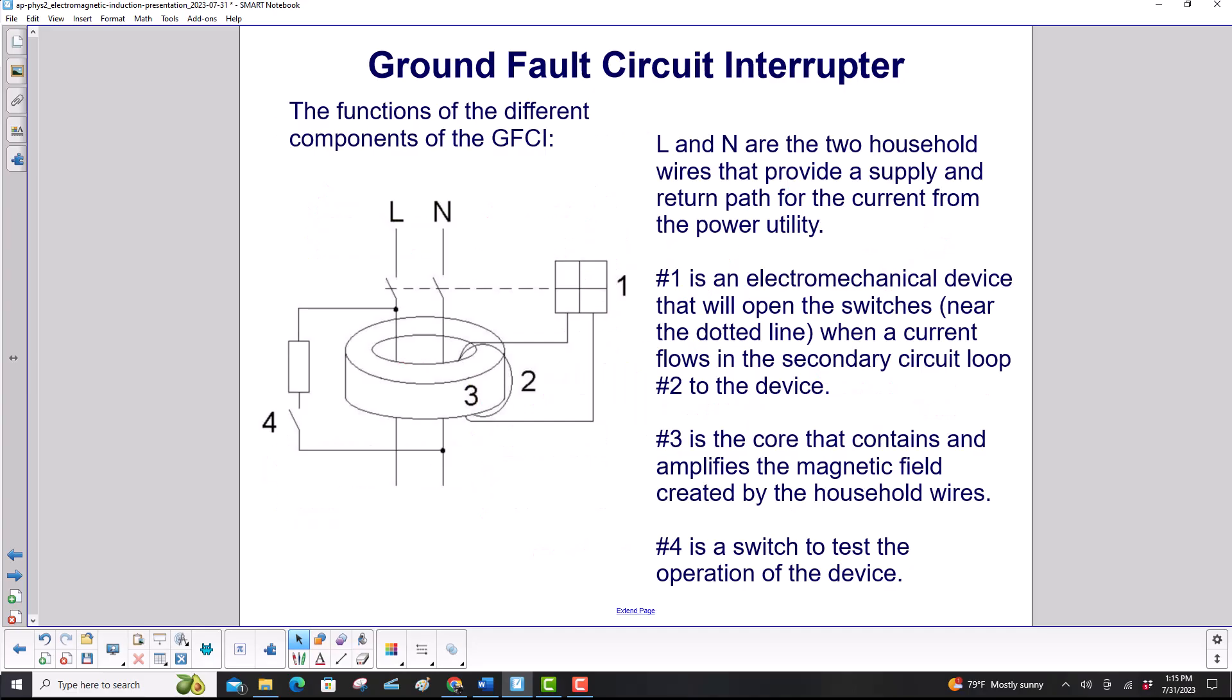Here are the functions again. We have L and N are the two household wires that provide a supply and return path for the current from the power utility. So this is typically called the hot lead, and that'll come down like here. Then there'll be another current going in this direction, returning it to the power company.